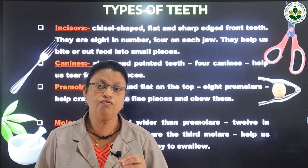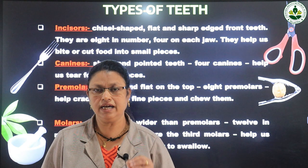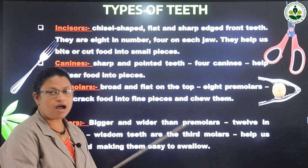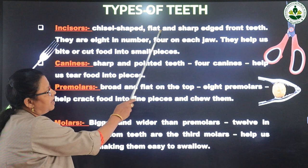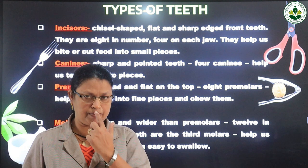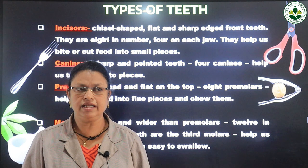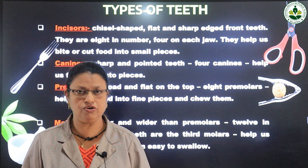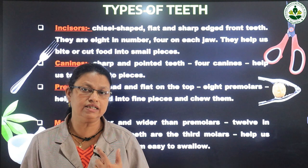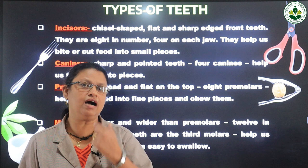Depending upon the shape and function, teeth are classified into four groups. The first type is incisors. Incisors are chisel-shaped, flat, and sharp-edged teeth. There are four incisors in the upper jaw and four in the lower jaw.